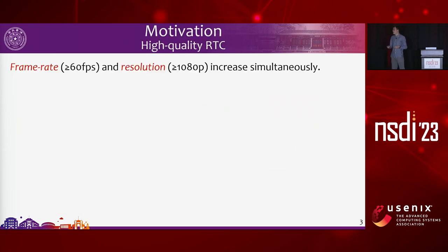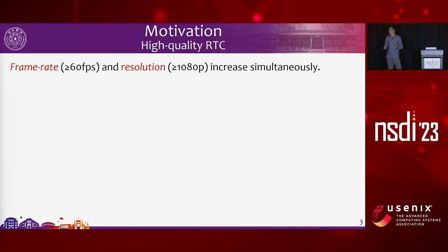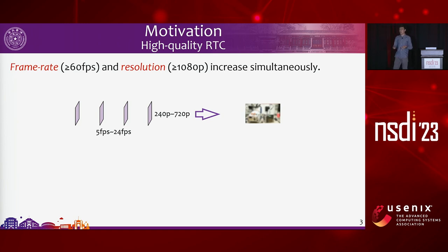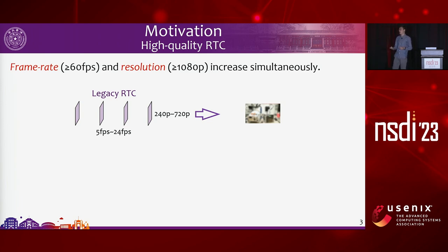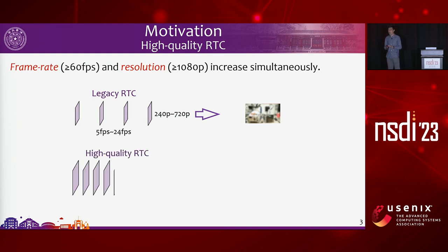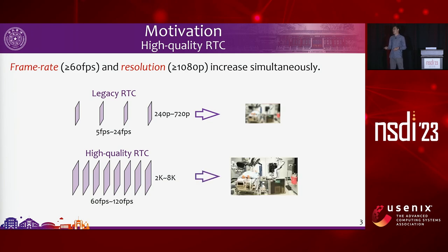For RTC applications nowadays, there's a trend of increasing quality. Quality here has two parameters: frame rate and resolution. Frame rate is the number of video frames in a certain time period, and resolution is the size of each frame in number of pixels. For legacy RTC like video conferencing, we see resolution of 240p to 720p and frame rates usually less than 24 FPS. But for high-quality RTC, we see resolutions of 2K, 4K, sometimes 8K, and frame rates as high as 120 FPS.